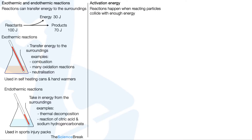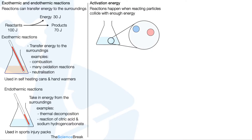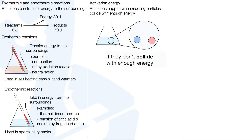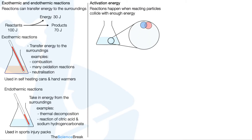Activation energy. Reactions happen when reacting particles collide with enough energy. Here is a flask with the reaction going on — if particles don't collide with enough energy there will not be a chemical reaction. However, if they do collide with enough energy, there is a chemical reaction between those particles. The minimum energy needed for particles to react is called the activation energy.